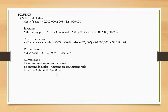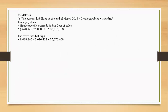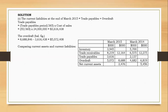The bank overdraft always swings — it changes depending on receivables and payables. That's why you determine it as a balancing figure. The bank overdraft can increase or decrease as long as it doesn't exceed the bank limit. Now, after obtaining the overdraft, matters become much simpler. We just compare current assets and current liabilities for 2014 and 2015. We copy the figures for March 2014 and March 2015 side by side.